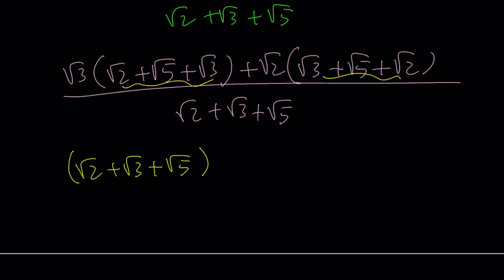So if you take that out, you end up with root 3 plus root 2. And that is going to be divided by root 2 plus root 3 plus root 5.